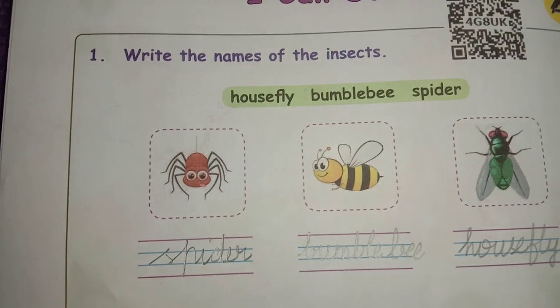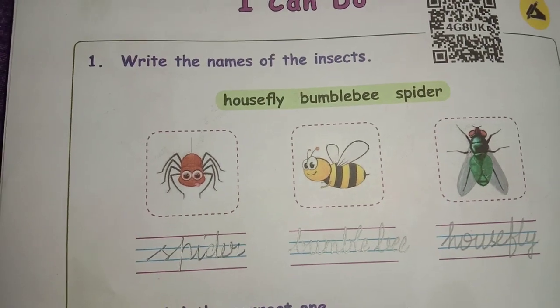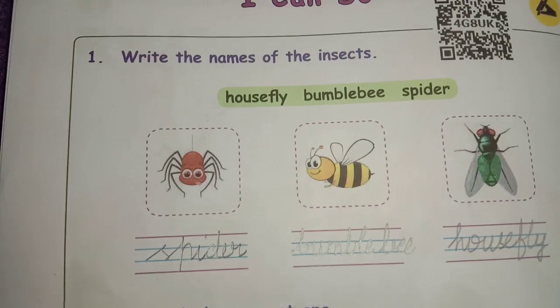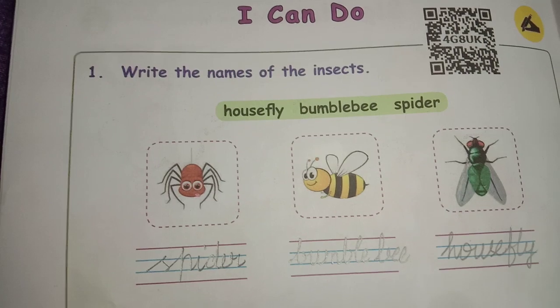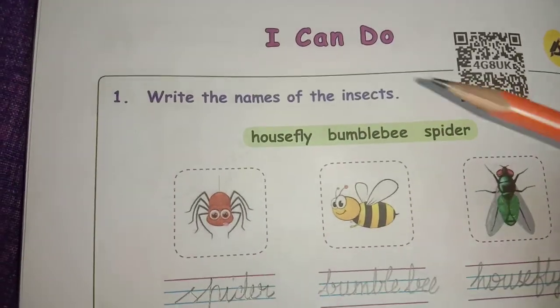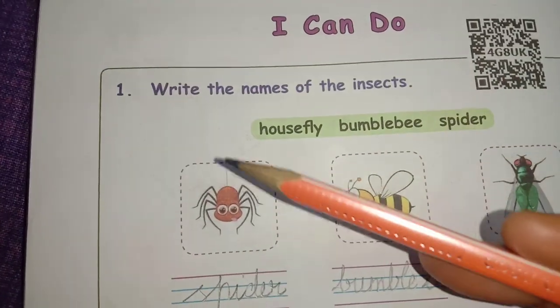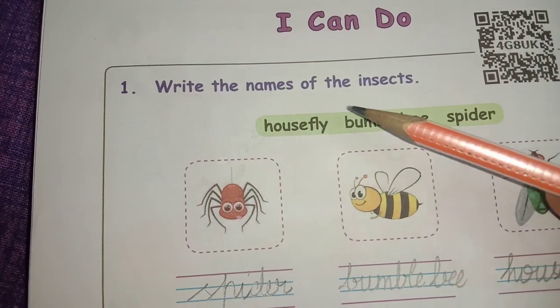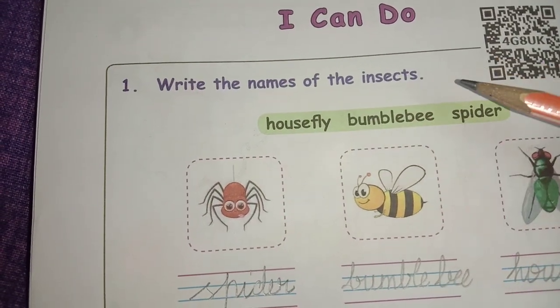Now we are going to see for class 3, unit 2, page number 104, term 1, I can do. First room letter: write the names of the insects.